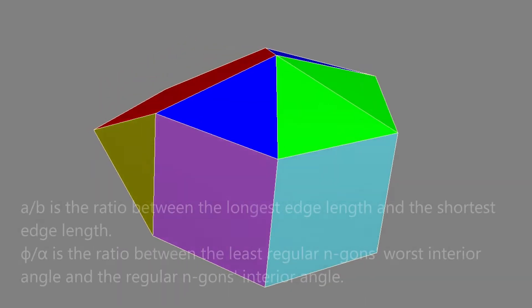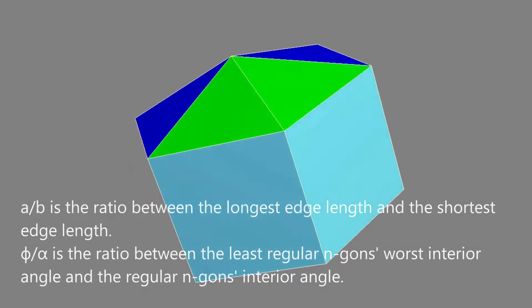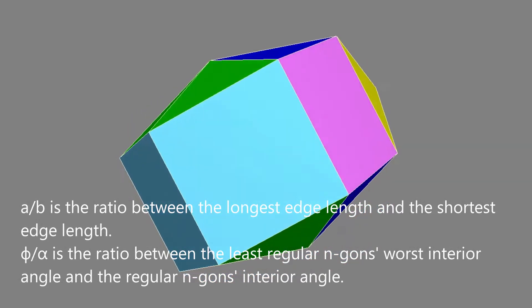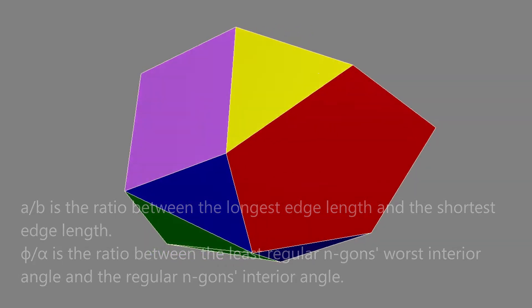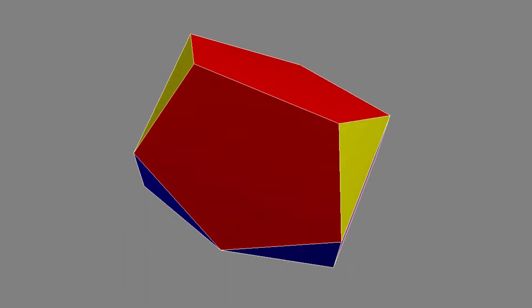A over B is the ratio between the longest edge length and the shortest edge length. Phi over alpha is the ratio between the least regular n-gon's worst interior angle and the regular n-gon's interior angle.